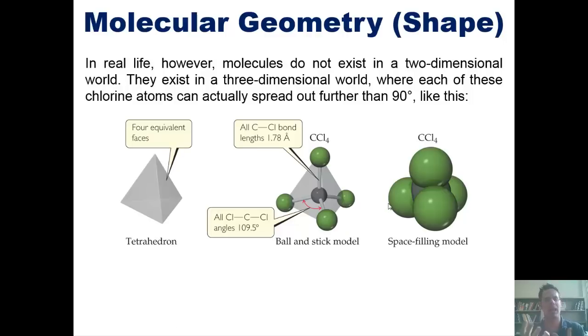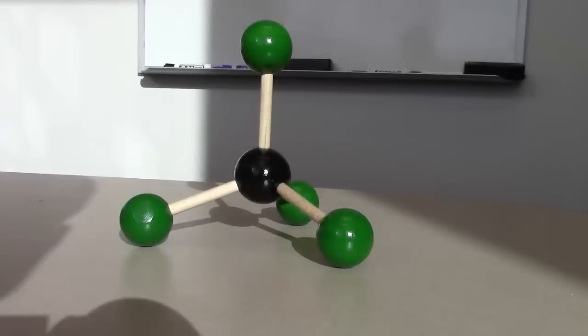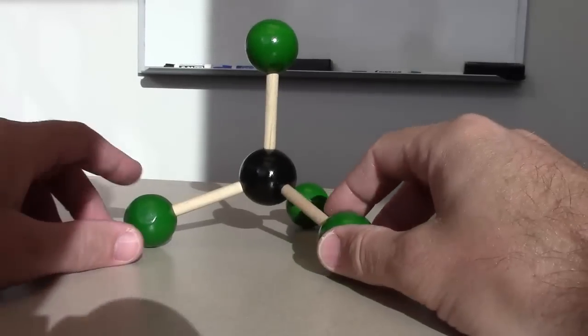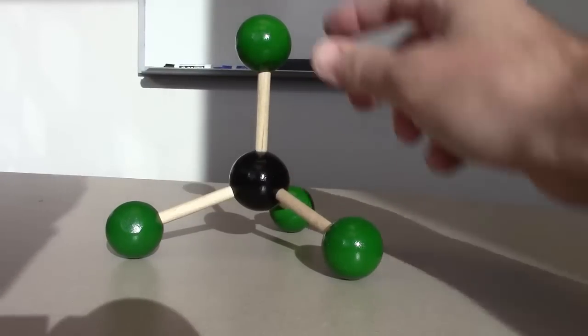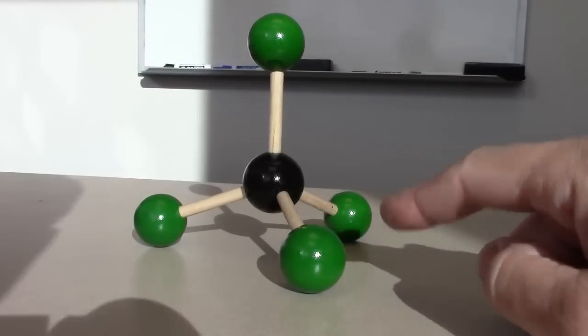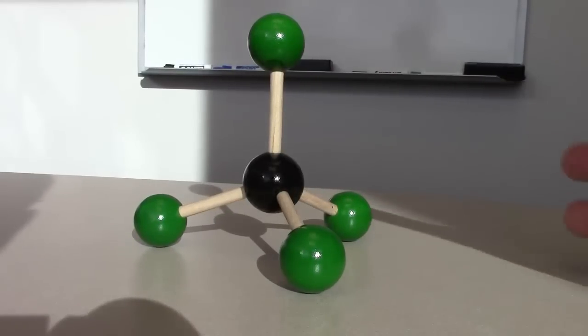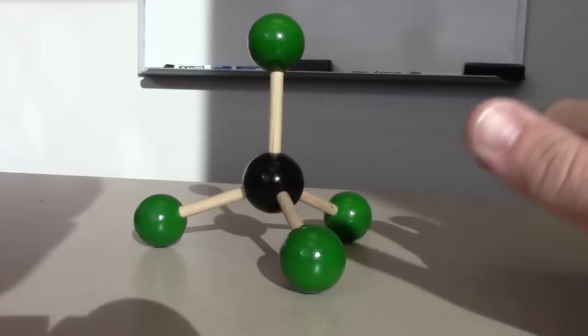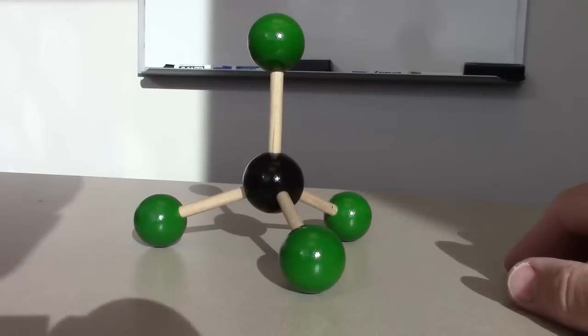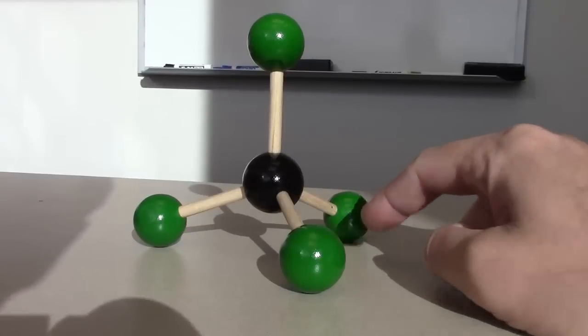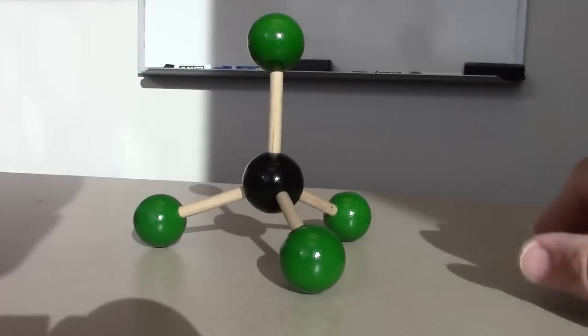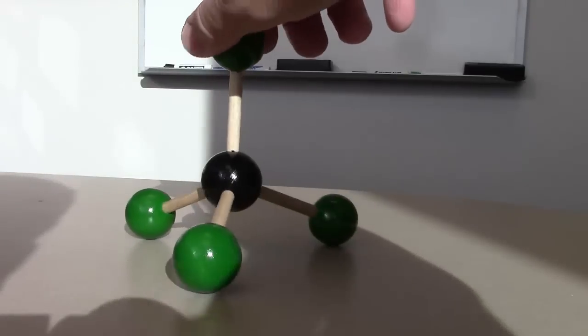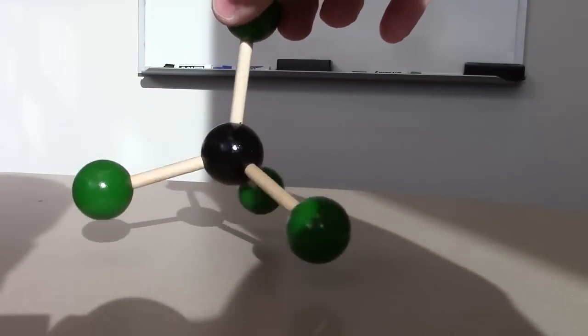I'll show you that right now in a handheld model. So this is a cute little handheld model. You can see that this carbon atom, depicted as a black sphere, is surrounded by four individual chlorine atoms in this molecule of carbon tetrachloride, or CCl4. As I was just explaining, in real life, in the three-dimensional world, each of these chlorine atoms can be further apart from each other than 90 degrees, as would be the case if you were only in a two-dimensional world. So this would be the overall shape that we would see in carbon tetrachloride.